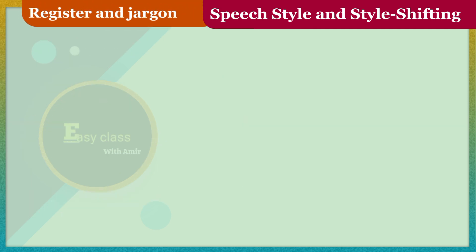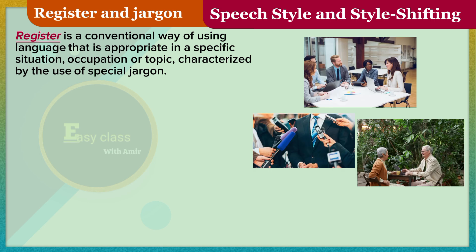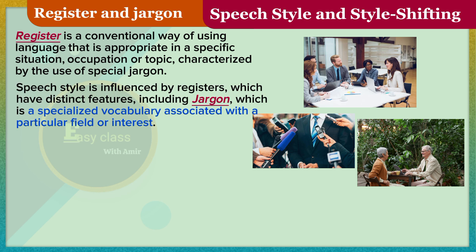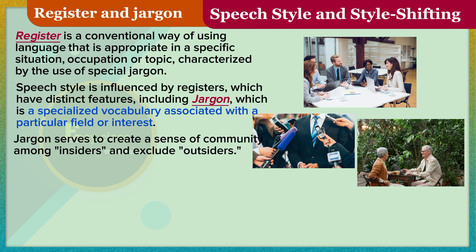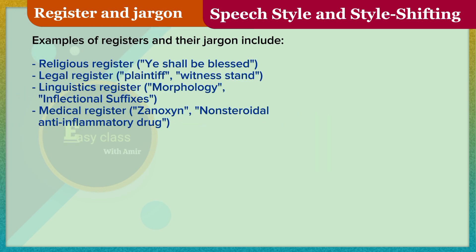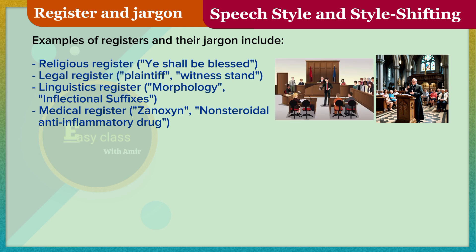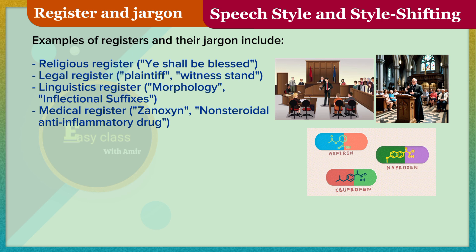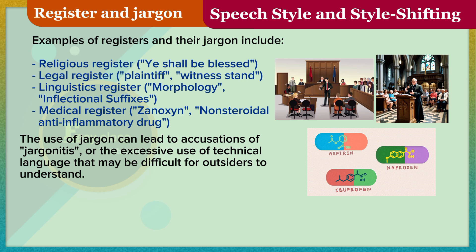Register is a conventional way of using language that is appropriate in a specific situation, occupation, or topic, characterized by the use of special jargon. Speech style is influenced by registers, which have distinct features including jargon — a specialized vocabulary associated with a particular field or interest. Jargon serves to create a sense of community among insiders and exclude outsiders. Examples include: religious register ('ye shall be blessed'), legal register ('plaintiff', 'witness stand'), linguistics register ('morphology', 'inflectional suffixes'), and medical register ('nonsteroidal anti-inflammatory drug'). The use of jargon can lead to accusations of 'jargonitis' — the excessive use of technical language that may be difficult for outsiders to understand.